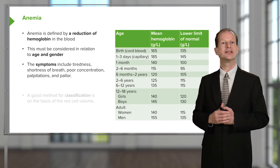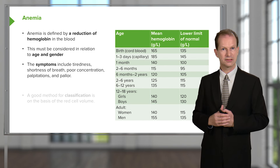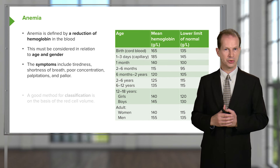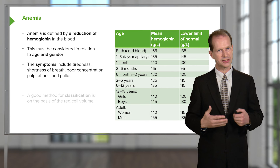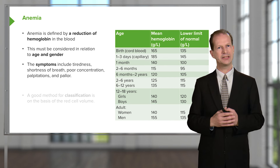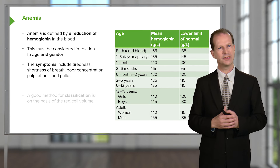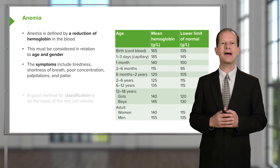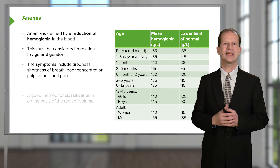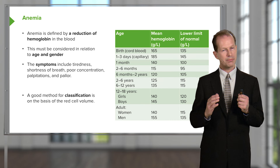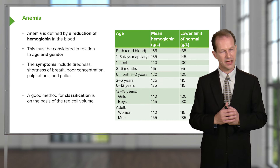The symptoms of anemia include a range of things including tiredness, shortness of breath, poor concentration, palpitations because the heart is beating fast and vigorously, and of course pallor is a sign that somebody may be anemic.